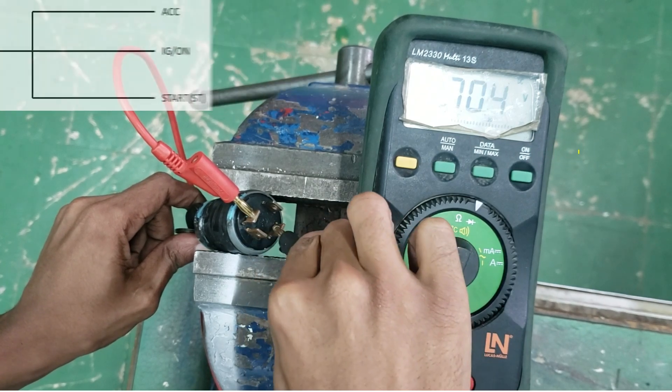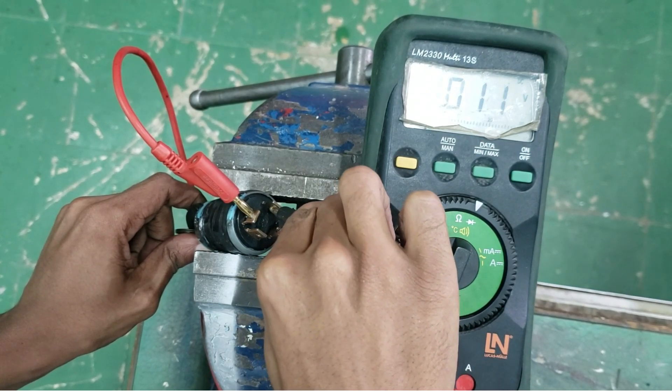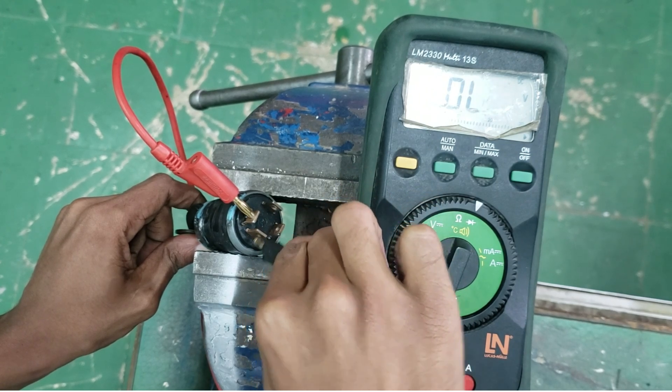When starting the vehicle, all of the battery's available current is directed to the ignition circuits and the starter motor.